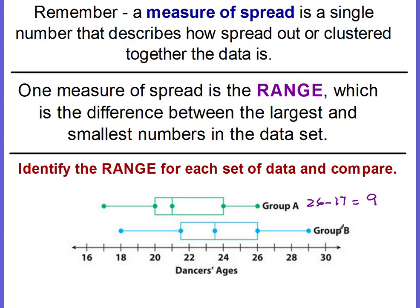Now we're going to do the same thing for group B. The high, which is the maximum value, is at 29 on the number line, and the minimum value is at 18. We subtract the two to find the range and we get 11. So the range in ages for group B would be 11 years. The range for group B is larger than the range for group A, meaning the data is a little bit more spread out.